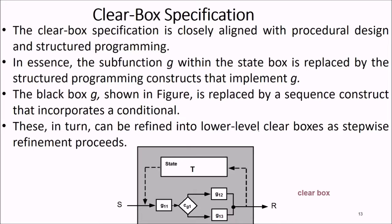The clear box specification is closely aligned with procedural design and structured programming. The sub-function g within the state box is replaced by structured programming constructs that implement g. The black box g is replaced by a sequence construct incorporating conditions, which in turn can be defined into lower-level clear boxes through stepwise refinement.